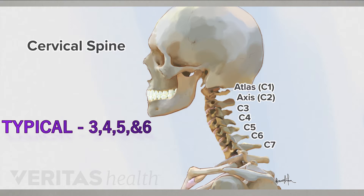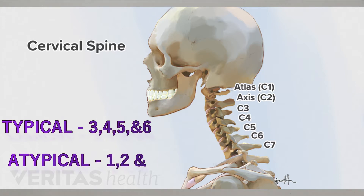The 3rd, 4th, 5th, and 6th vertebrae all present similar features. The atypical cervical vertebrae are the 1st, 2nd, and 7th cervical vertebrae, which present special features different from those of the typical cervical vertebrae.